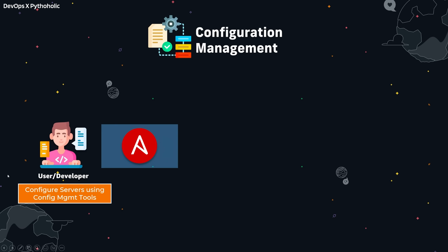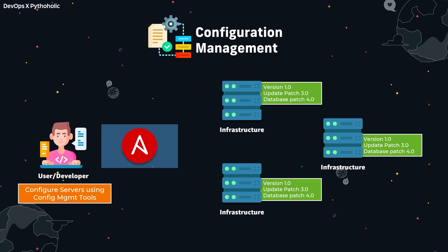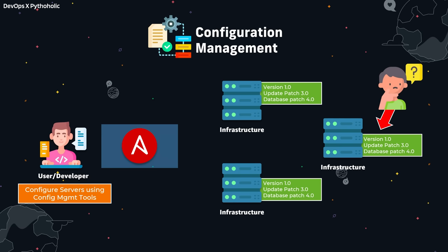Let's suppose we are the ops team using config management to update our servers. We configure and deploy updates on our servers and patch them using tasks. One day, someone comes in and manually changes the configuration of one of our servers. How do we know the original state of the server? That is why we need a tool that can preserve the original state of the deployment — and that is something tools like Terraform can do. That's why we use config management and IaC tools in tandem.